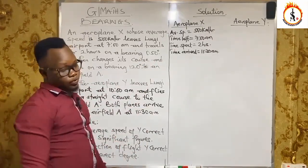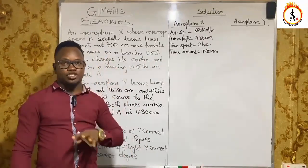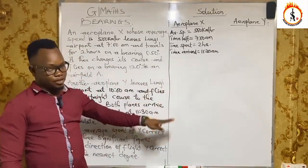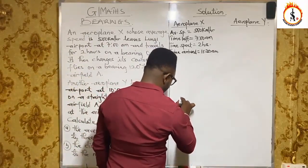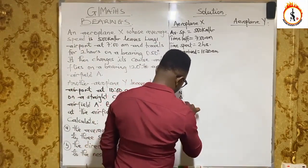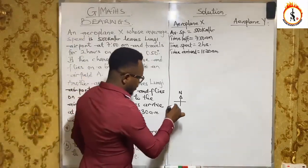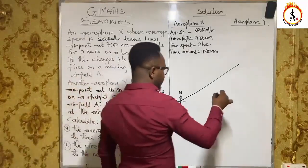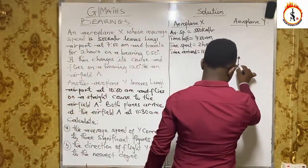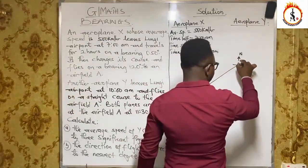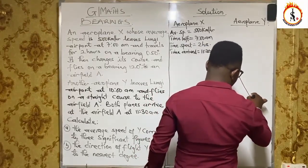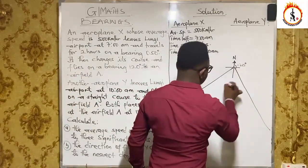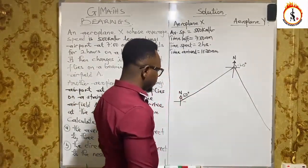As beginners, whenever you're faced with bearing questions, it is nice to do a rough sketch so you see a clearer picture of the diagram before getting your neat sketch. This point is Lungi Airport. We always give reference to our north pole. Airplane X left here and flew on a bearing of 050 degrees, then from that point it changed course and flew on a bearing of 120 degrees — that is 90 plus 30 — arriving at the airfield.